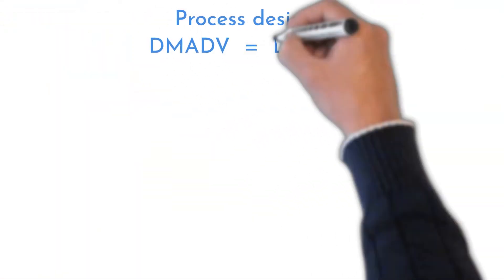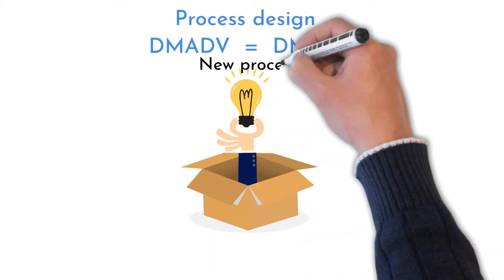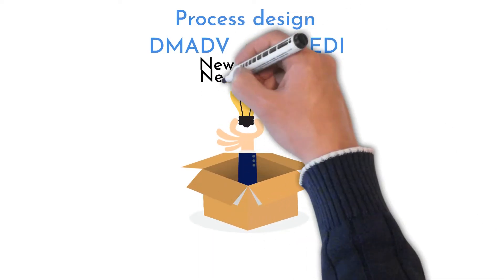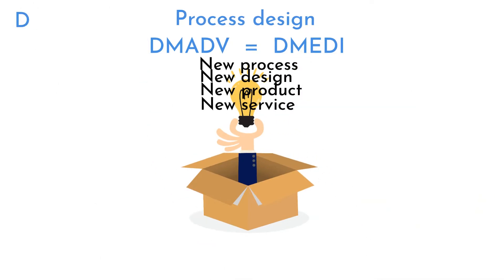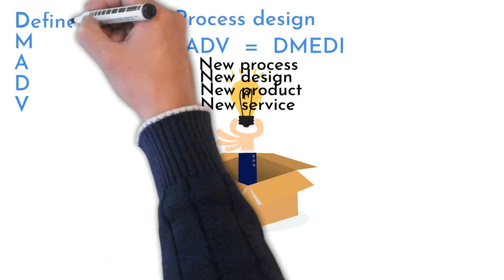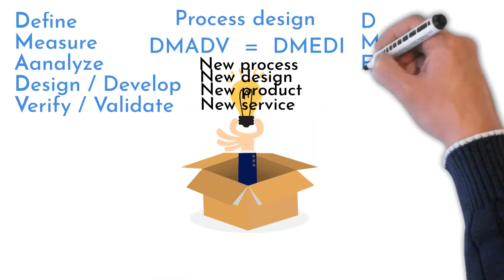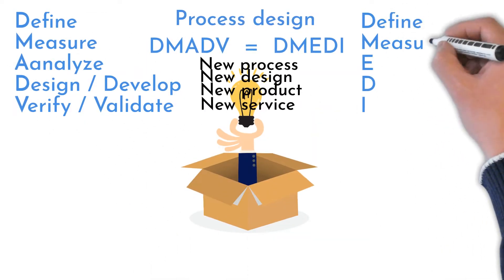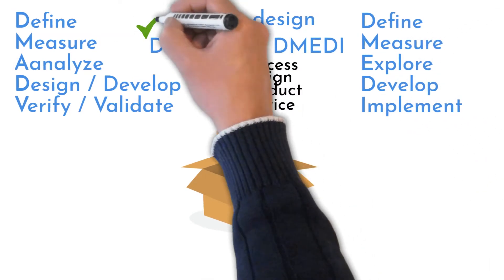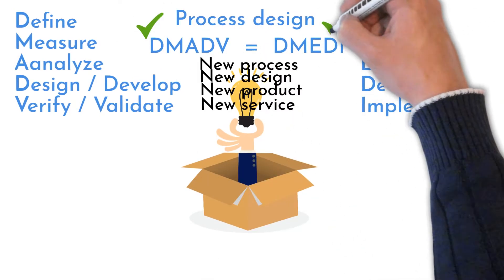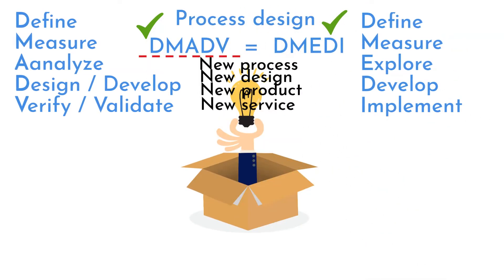Process design is the next project type. DMADV, sometimes called DMETI, helps with developing new, non-existing processes. DMADV stands for Define, Measure, Analyze, Design, and Verify. DMETI stands for Define, Measure, Explore, Develop, Implement — five main phases, two different acronyms, but the same method. DMADV is globally more preferred, so I will use it.